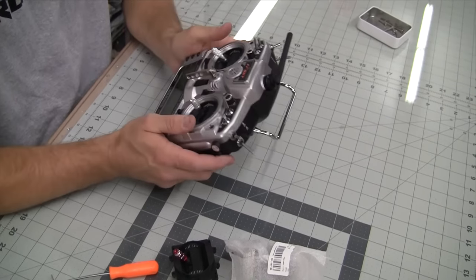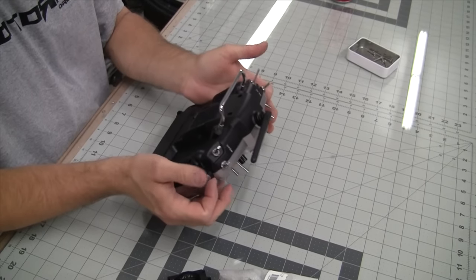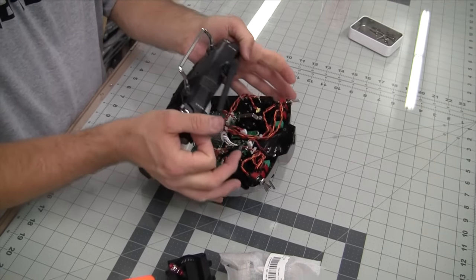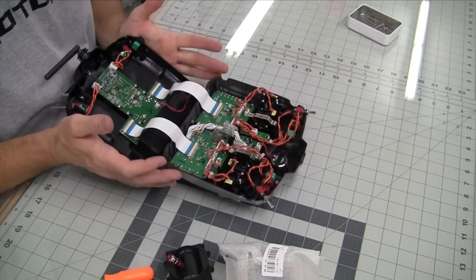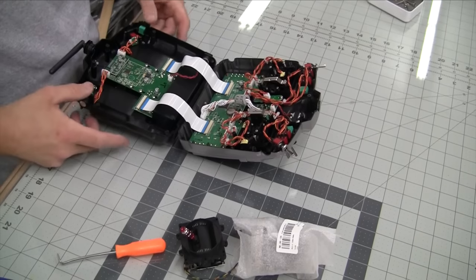All right, so the way you get this open, the easiest way is to flip it over, put your fingers on these and your thumbs on these and just push it apart like that, and then it'll open up. Just be careful of the ribbon cables so you don't damage them, and that way your buttons stay there and these buttons stay here.